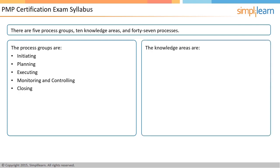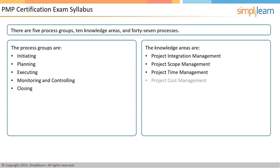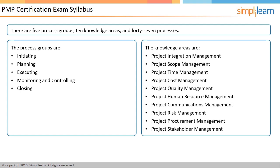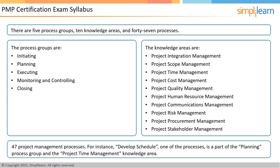A knowledge area is a set of specific processes performed to meet a project objective. As per the PMBOK guide, there are 10 knowledge areas. There are 47 processes in total. For example, develop schedule is one of the processes and is part of the planning process group and the project time management knowledge area. Likewise, in the human resource management knowledge area, the develop human resource plan process is in the project planning group, and the manage project team process is in the project execution group.